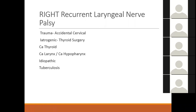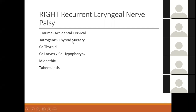The right recurrent laryngeal nerve descends from the base of the skull to the neck between the trachea and esophagus, then loops around the right subclavian artery and goes up again — it does not enter the chest. So all causes of right recurrent laryngeal nerve palsy are in the neck, or occasionally an apical lung lesion. Most commonly right recurrent laryngeal nerve palsy is due to trauma or malignancies of the thyroid or larynx.